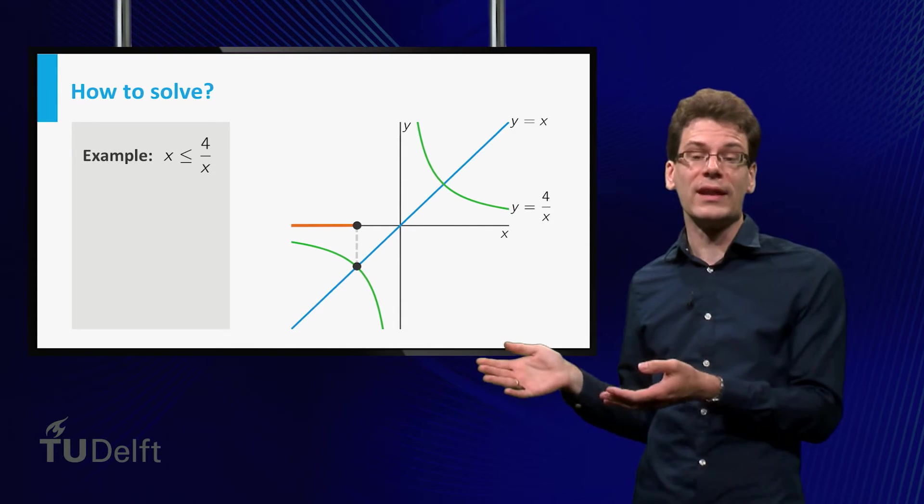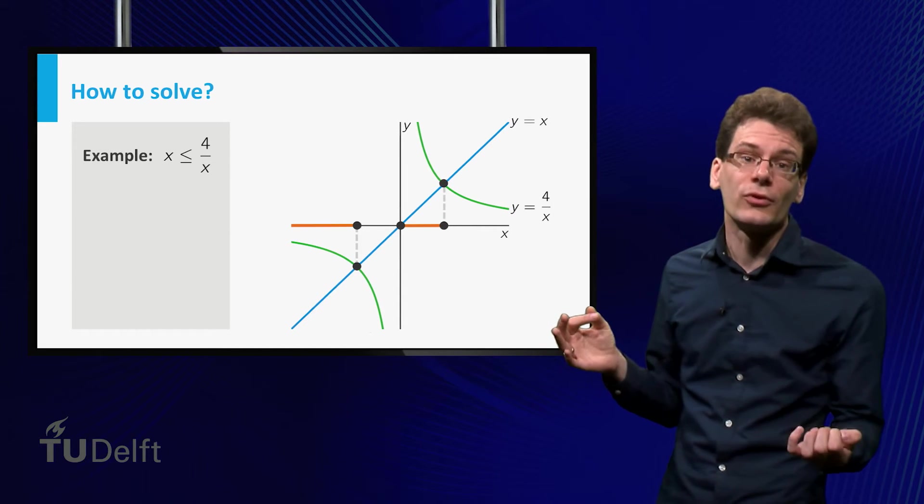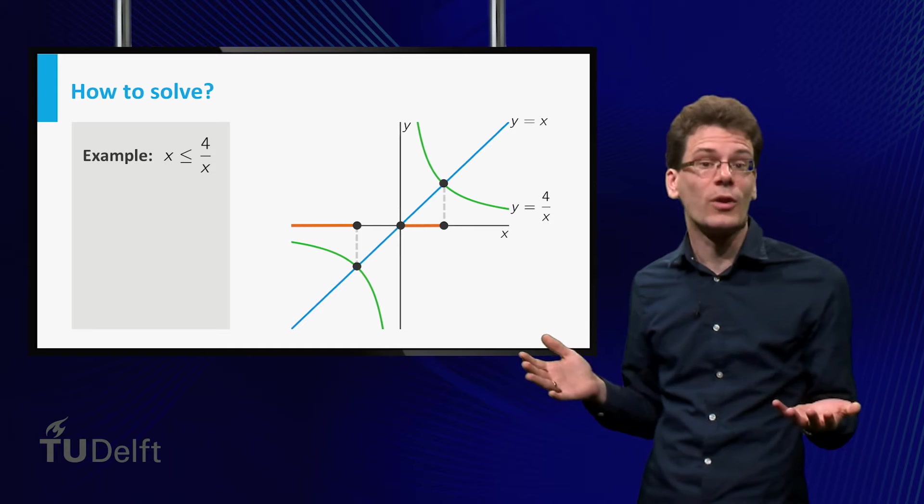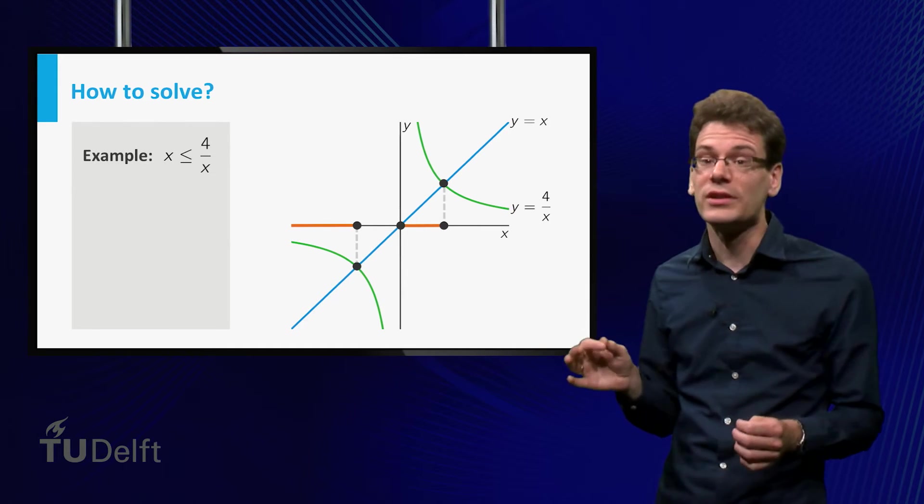One unbounded interval on the left, and one bounded interval. These two intervals form the solution set of the inequality. For values of x outside the set, the inequality does not hold.